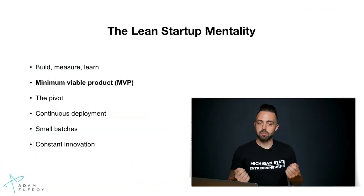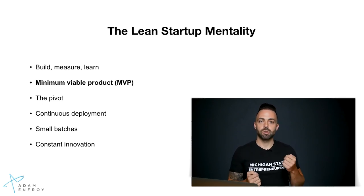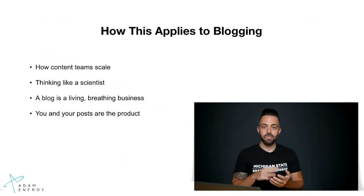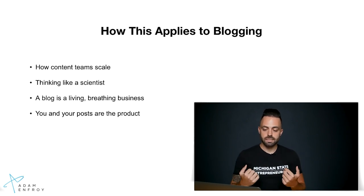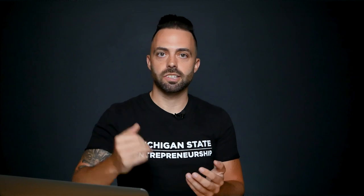Finally, constant innovation. The book states that constant innovation creates radically successful businesses — and that's true. You have to innovate and adapt. You can't just keep trying the same thing over and over expecting different results. For blogging, this means thinking like a scientist — treating your blog as a living, breathing business. I'm actually competing with huge tech companies in search engine results, right there alongside anyone else. Your information as a blog is the path to financial freedom.